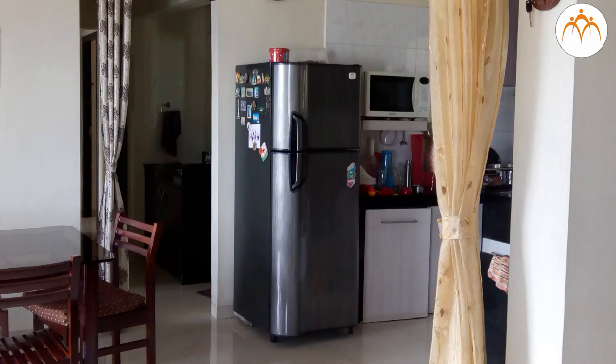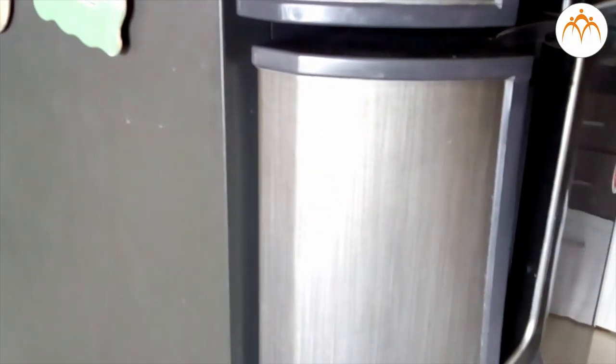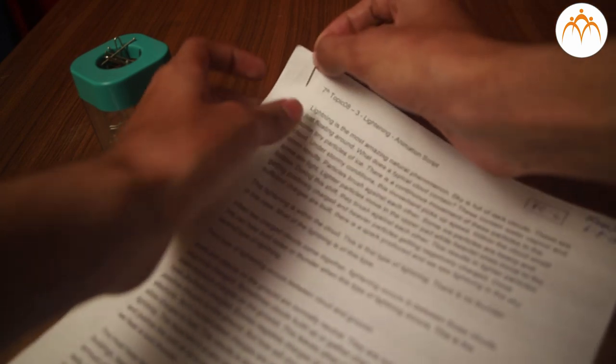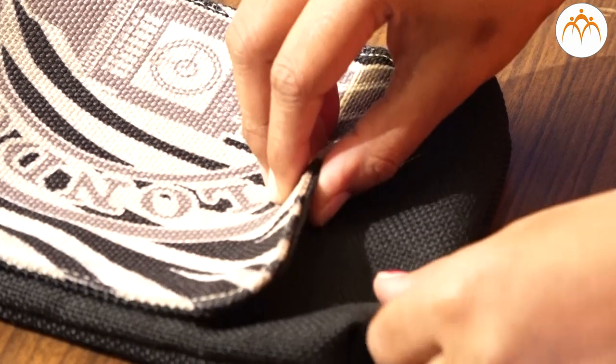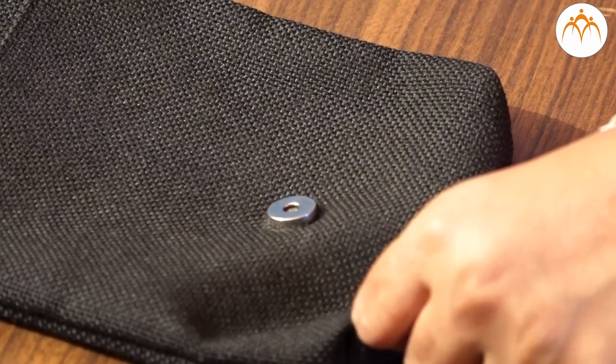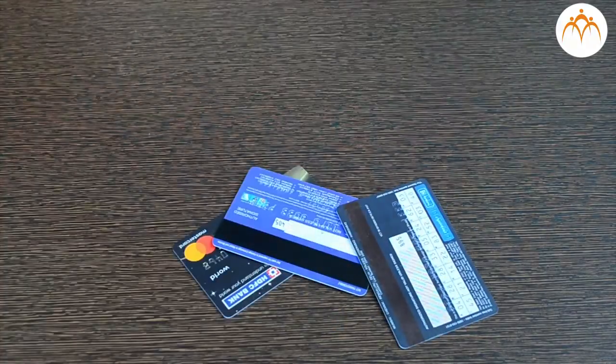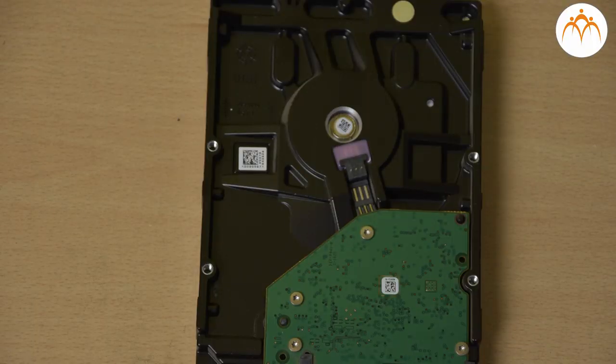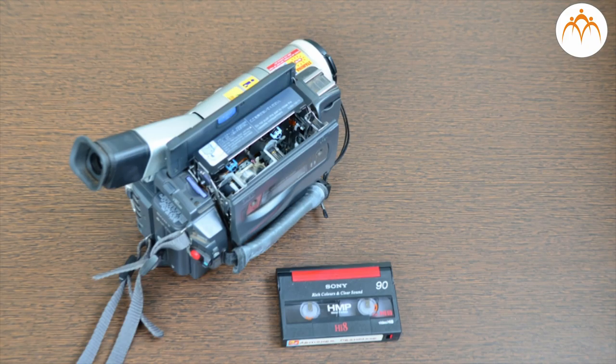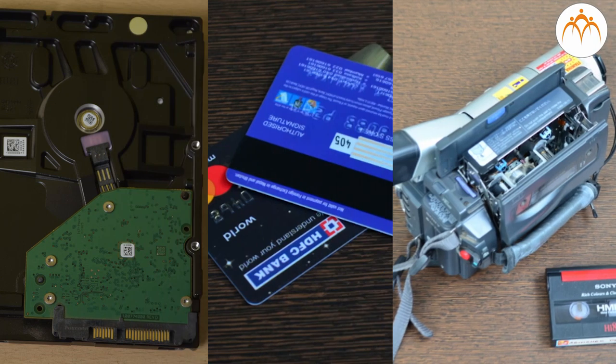You must have noticed door of fridge getting closed on its own, pins sticking to the pin holder, cupboard doors with a click or even purse flap sticking to other side. Magnetic materials are used in credit cards, hard disks, audio and video tape to store information.